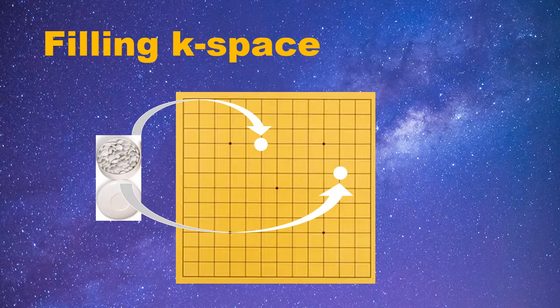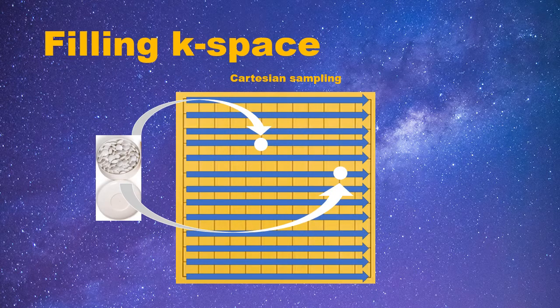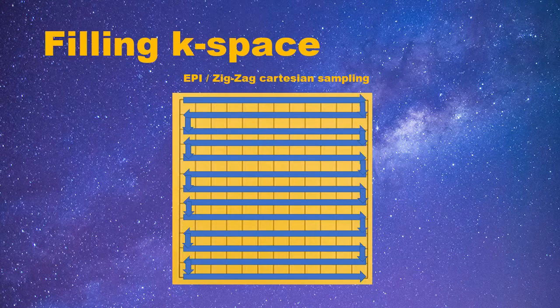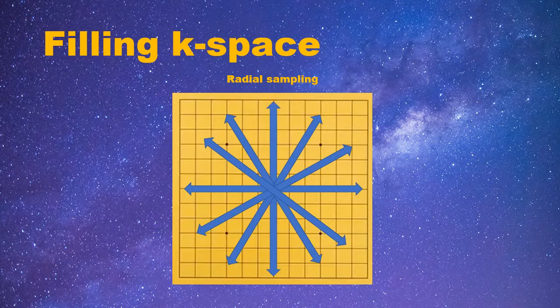The first way and also the simplest way is filling the k-space row by row. This is called Cartesian sampling. What's more, the k-space can also be filled in a zigzag style. This is usually called EPI, or you can say this is a zigzag Cartesian sampling. In addition to Cartesian sampling, the k-space can also be filled with non-Cartesian trajectories. For example, this is a radial sampling pattern.